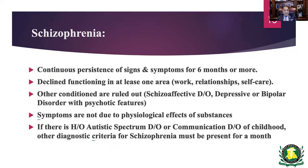Schizophrenia involves continuous persistence of signs and symptoms beyond six months with a decline in functioning in at least one area — work, relationships, or self-care. Other conditions must be ruled out: schizoaffective disorder, psychosis during depressive or manic episodes in bipolar disorder, and the direct physiological effect of substances. A history of autism spectrum disorder or communication disorder in childhood can still lead to a schizophrenia diagnosis, but symptoms must last at least a month. These criteria are from DSM-5.